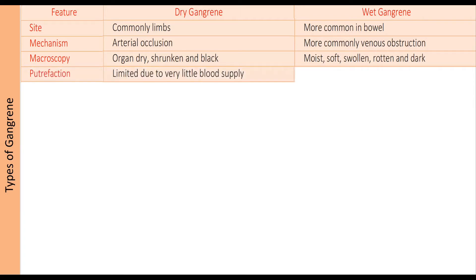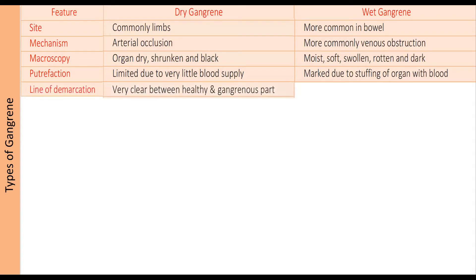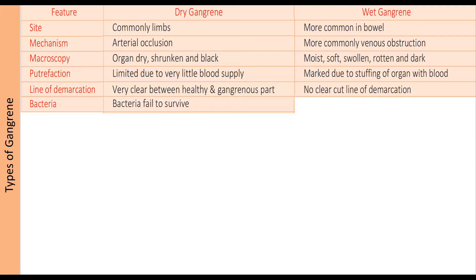Putrefaction is limited in dry gangrene due to very limited blood supply. In wet gangrene, there is marked putrefaction due to congestion and stuffing of the organ with blood. The line of demarcation is very well appreciated in dry gangrene, separating the healthy and gangrenous parts of the limb. In wet gangrene, there is no clear line of demarcation. Bacterial growth is very limited in dry gangrene due to limited blood supply, whereas in wet gangrene bacteria survive readily due to congestion of blood.